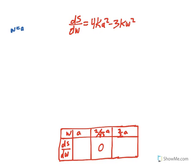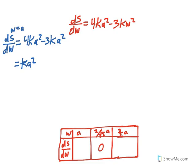When W = A: dS/dW = 4K·A² − 3K·A² = K·A². Since K is positive (proportionality constant for strength) and A² is positive, the derivative is positive before the critical point. This means the function is increasing before W = 2/√3 · A.